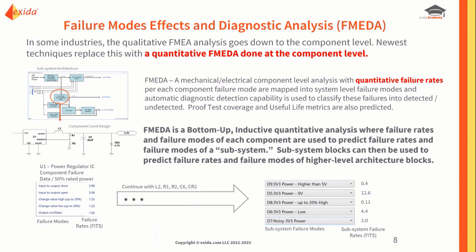We are talking about Failure Modes, Effects, and Diagnostic Analysis — FMEDA. While many of you might be used to a qualitative FMEA analysis that goes down to the component level, the fundamental next-generation design process replaces that qualitative component analysis with a quantitative FMEDA done at the component level. FMEDA is a bottom-up inductive approach that generates reliability metrics necessary for functional safety verification. This includes failure rates as a function of failure modes, useful life, automatic diagnostic coverage, and proof test coverage — used for functional safety verification, reliability analysis, and availability analysis.